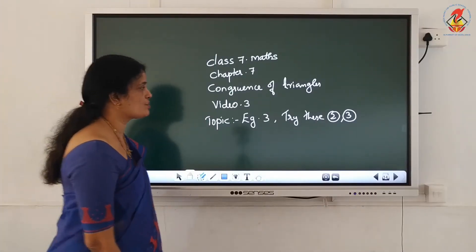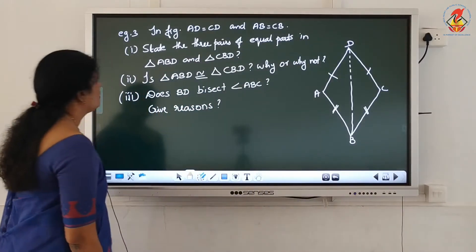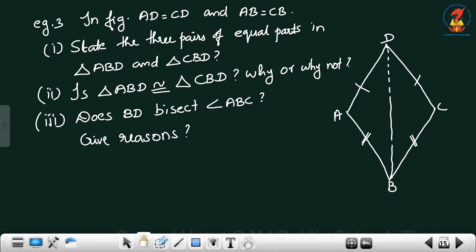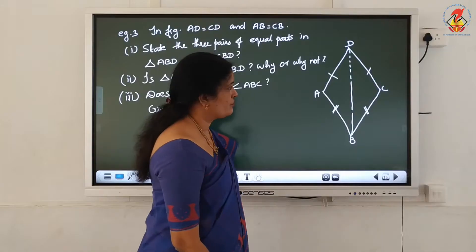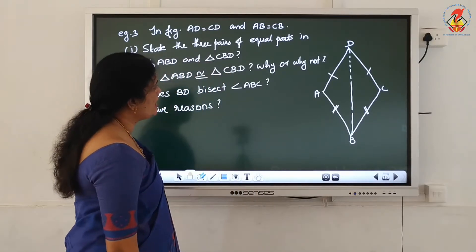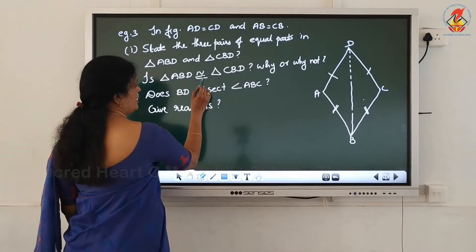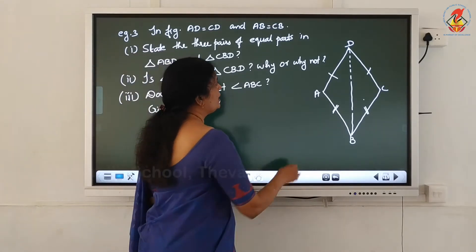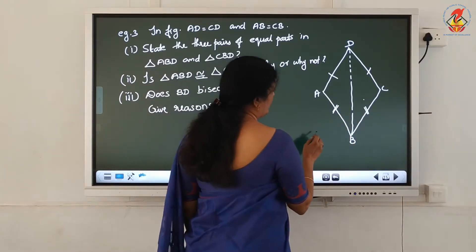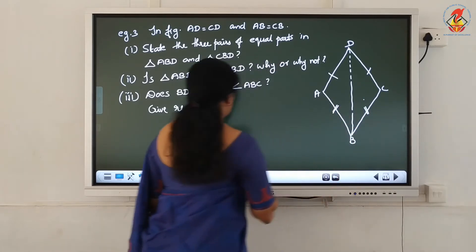Next topic, Example 3. In figure, AD equal to CD and AB equal to CB. State the 3 pairs of equal parts in triangle ABD and triangle CBD. Is triangle ABD congruent to triangle CBD? Why or why not? Does BD bisect angle ABC? Give reasons. In the figure, can you see the 2 triangles - triangle ABD and triangle CBD? We have to prove that these 2 triangles are congruent.